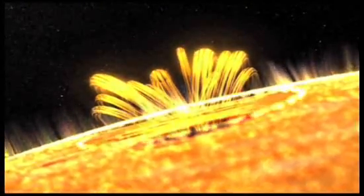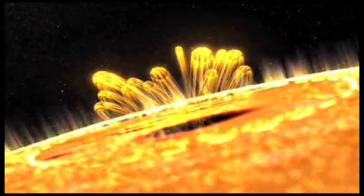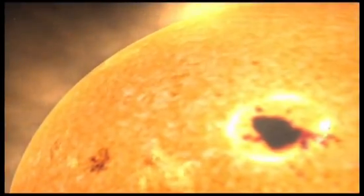SOHO's detectors have managed to catch the moment when the energy is suddenly released. A shockwave travels rapidly outward, like a solar tsunami. These waves stay on the surface of the Sun as they travel around it, but they are a sign of what's about to happen.